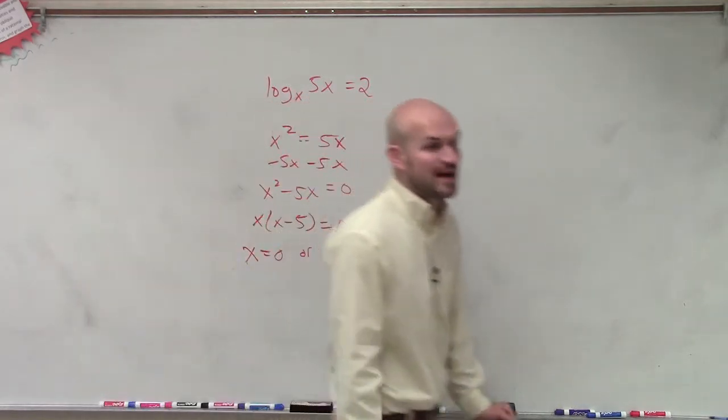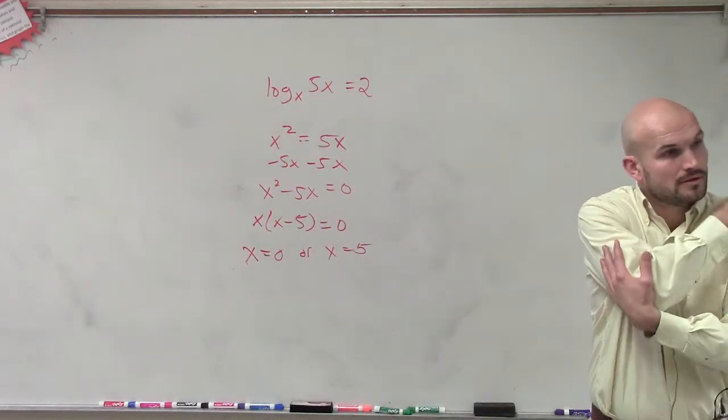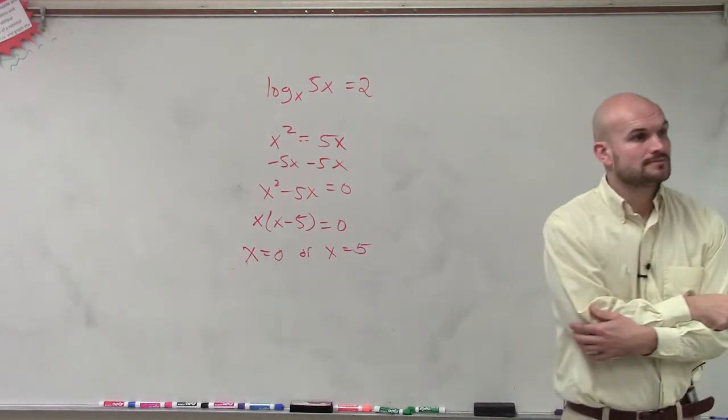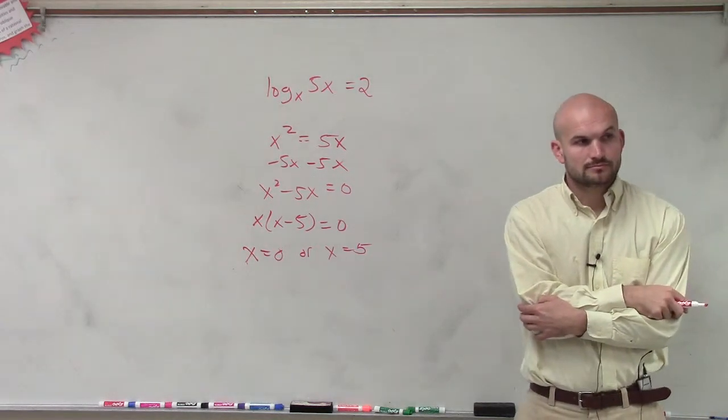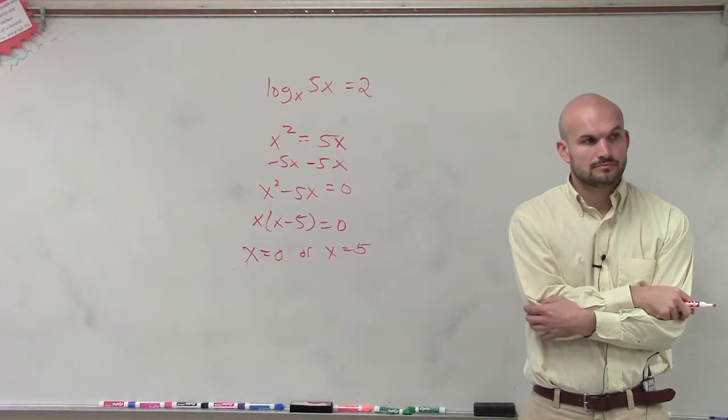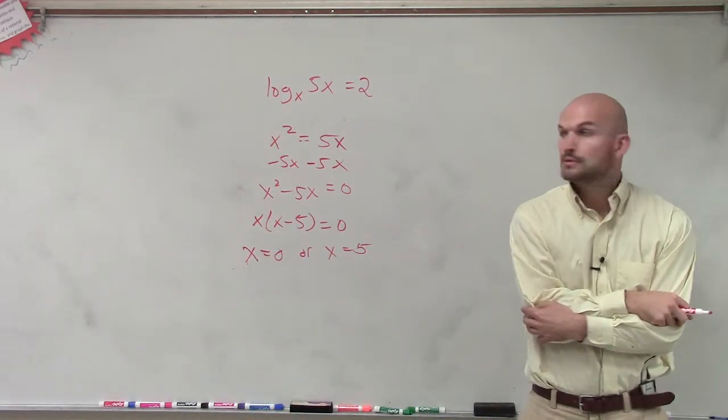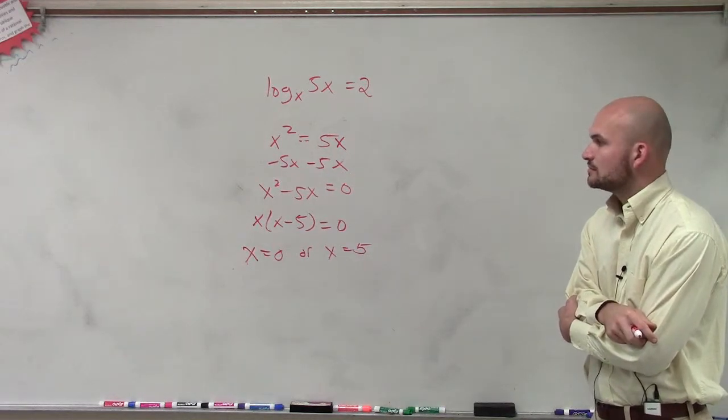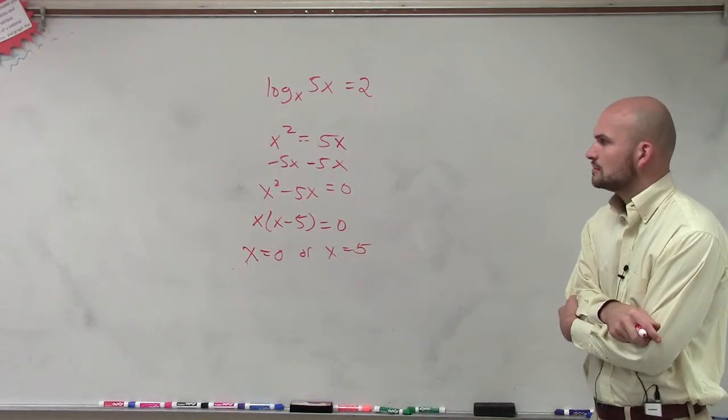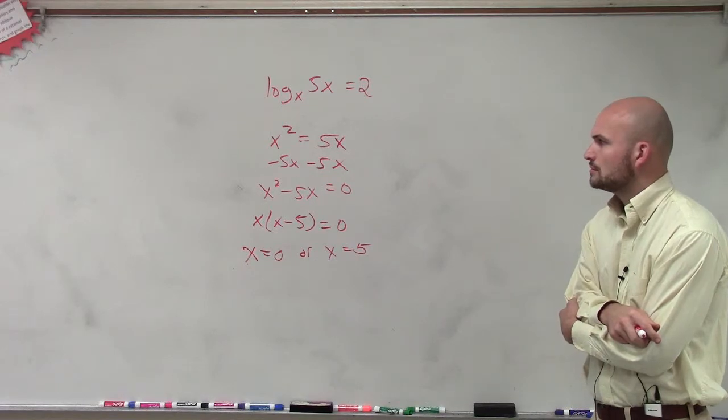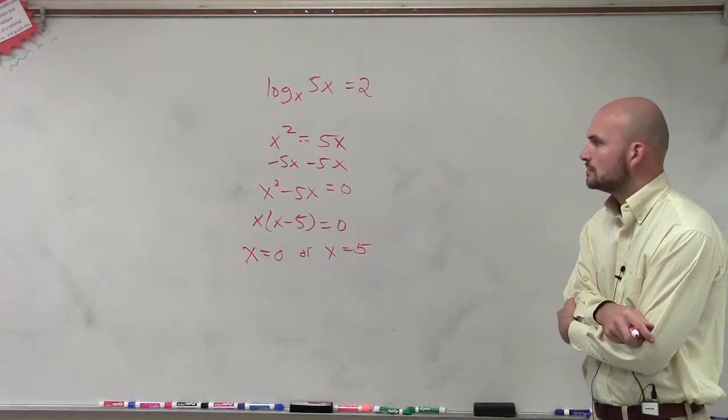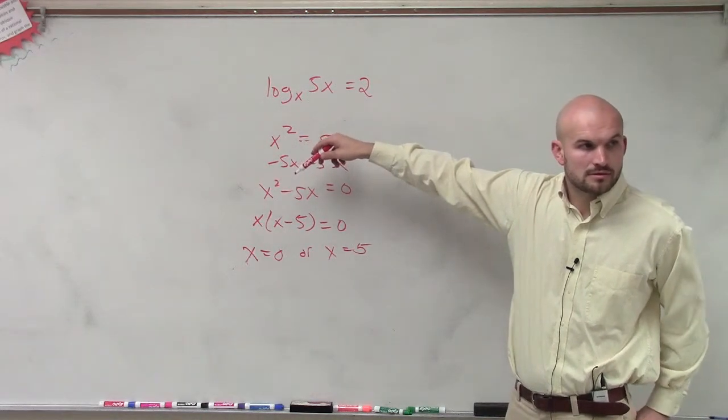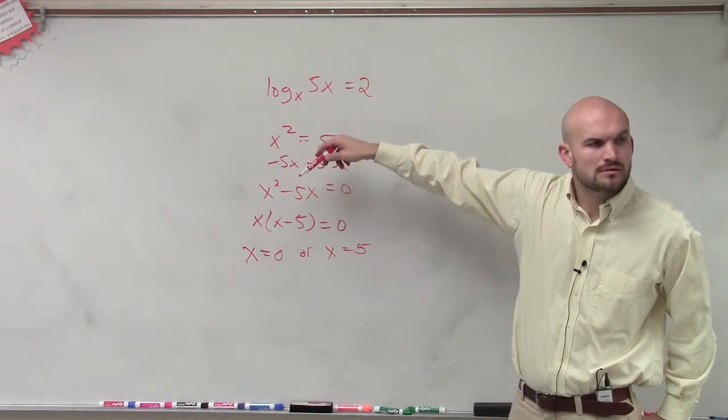So yes, there are going to be two different values for this. Why do you make it 5x minus x squared? I subtracted 5x on both sides. How do you know which side you use?